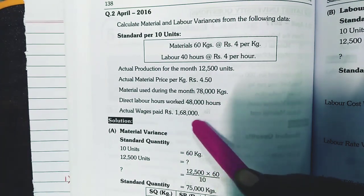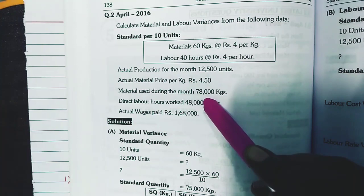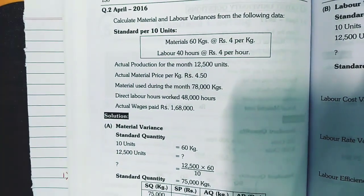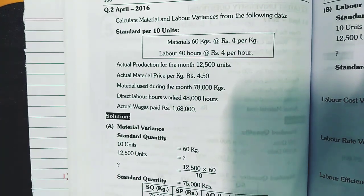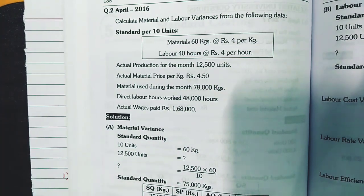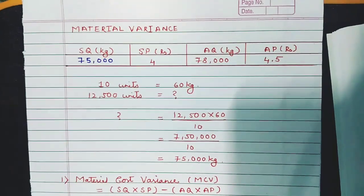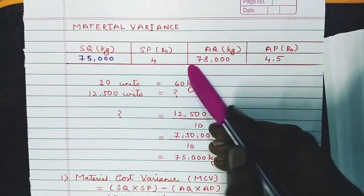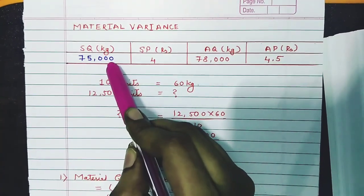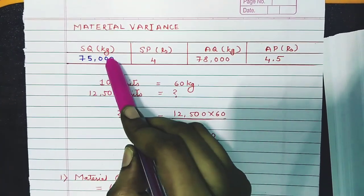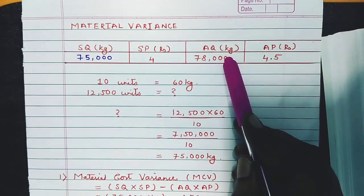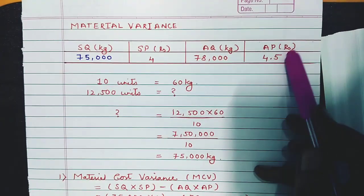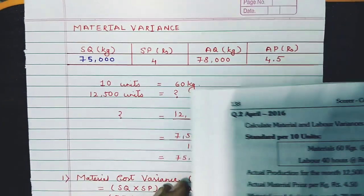Now we are going to solve the sum. This entire sum and solution is available on my website scoreachievers.com — the link is in the description box. To begin, we always prepare a table with: Standard Quantity (SQ) in kg, Standard Price (SP) in rupees, Actual Quantity (AQ) in kg, and Actual Price (AP) in rupees.